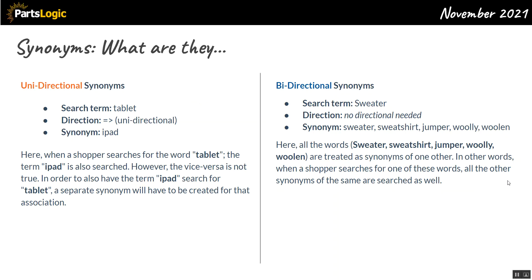First, synonyms — what are they? Synonyms come in two flavors: unidirectional or bidirectional. With unidirectional, you see an example where the shopper searches for the word 'tablet' and the term 'iPad' is also searched, however the reverse is not true. In order to have 'iPad' search for 'tablet,' a separate synonym has to be created for that association.